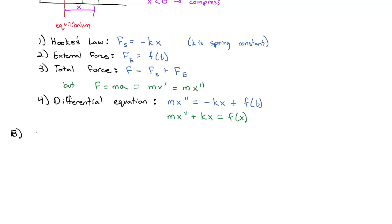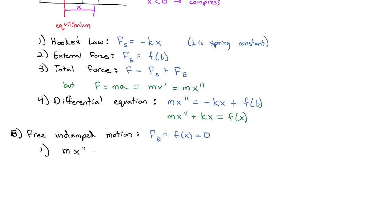We're going to tweak that equation slightly by dealing with what is called free undamped motion. When we say free undamped motion, we mean the external forces F(t) equal zero — no outside forces are acting on the spring at all. It's completely free from external forces. So our differential equation becomes: mass times x double-prime plus the spring constant times x equals zero.